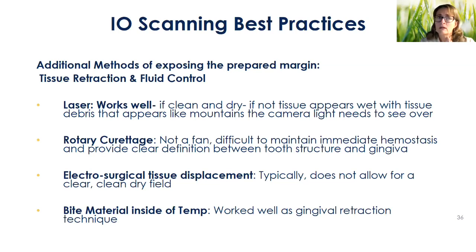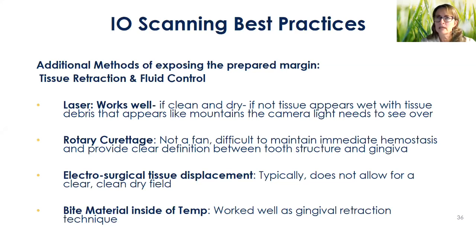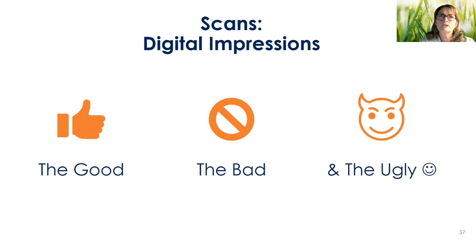The one item I really don't care for at all is rotary curettage. It's a technique that's been used for many years — typically a flame burr goes around the circumference of the prep to remove unhealthy tissue before an analog impression. What happens with an intraoral scan is that maintaining hemostasis after rotary curettage is really difficult, and oftentimes you can no longer place a cord because that part of the sulcus has been removed. It comes back, but for the moment it's been removed.